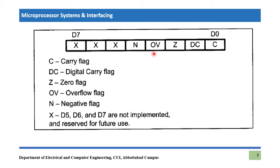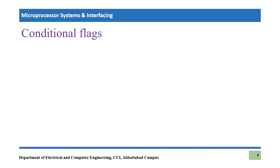Starting from D0, the bits have the following meanings: D0 is the carry flag (C), D1 is the digital carry flag (DC), D2 is the zero flag (Z), D3 is the overflow flag (OV), and D4 is the negative flag (N). D5, D6, and D7 are not implemented and reserved for future use in PIC18F452. We are going to see these conditional flags in detail.